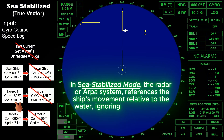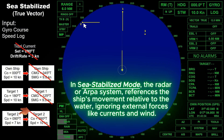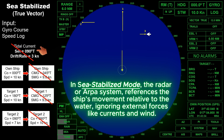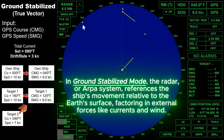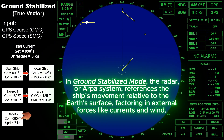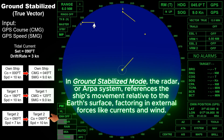In sea stabilized mode, the radar or ARPA system references the ship's movement relative to the water, ignoring external forces like currents and wind. While in ground stabilized mode, the radar or ARPA system references the ship's movement relative to the Earth's surface, factoring in external forces like currents and wind.